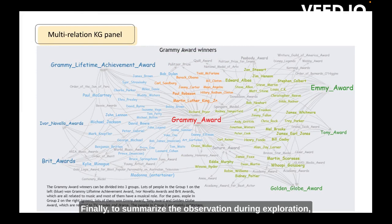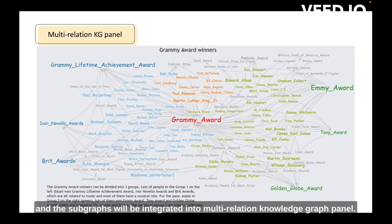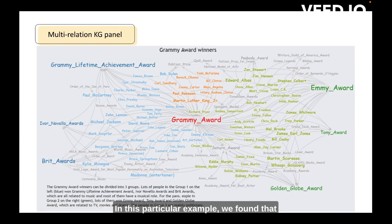Finally, to summarize observations during exploration, users can save the Knowledge Graph view, and the subgraph will be integrated into the Multi-Relation Knowledge Graph panel. In this particular example, we found that Grammy Award winners can be categorized into three groups: musicians, actors, and politicians.